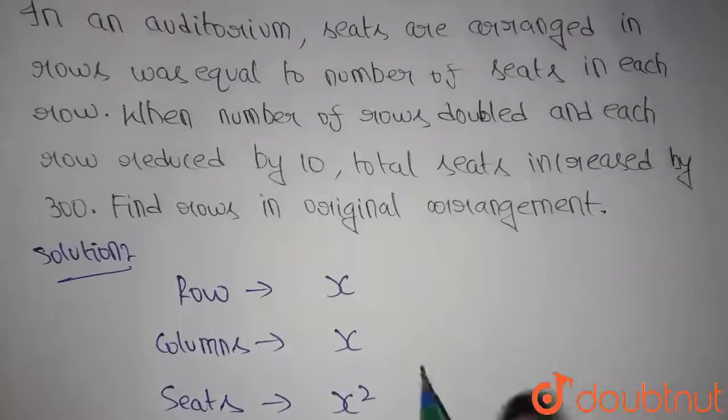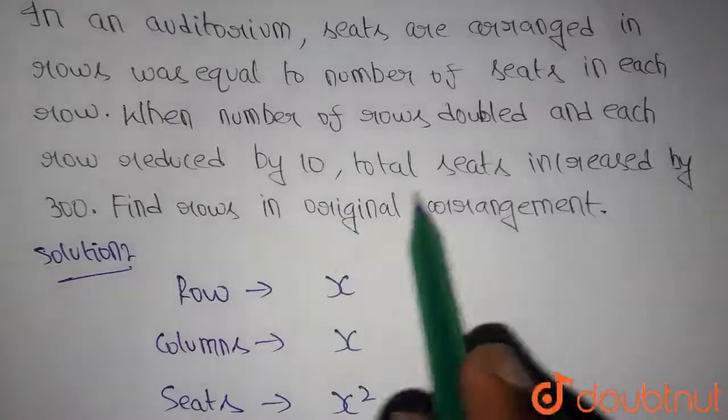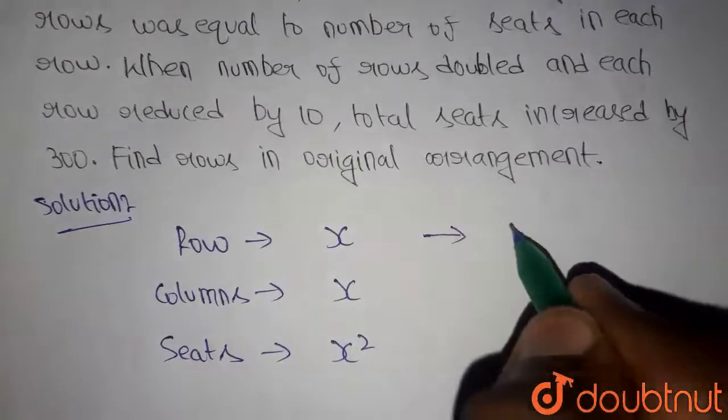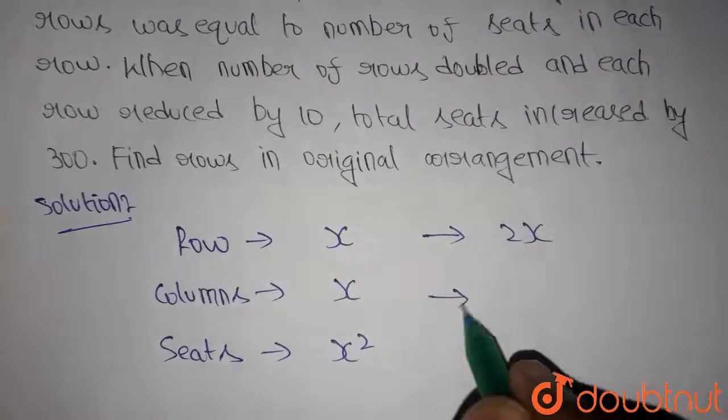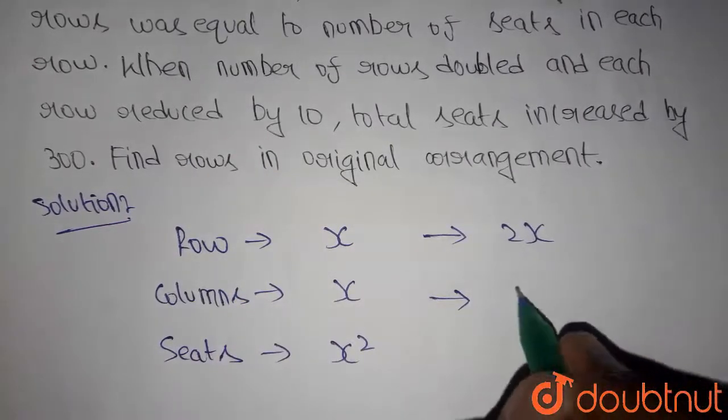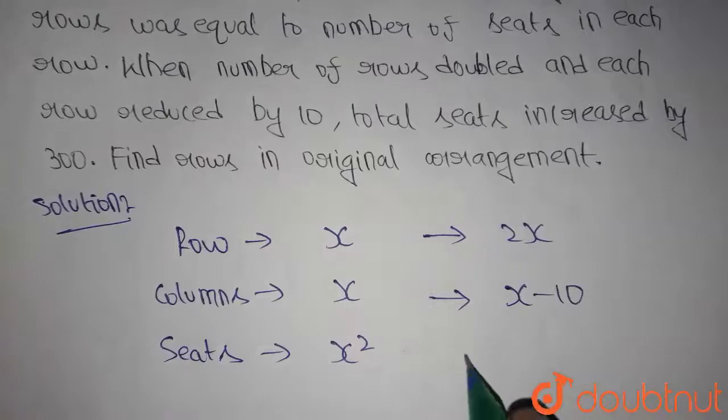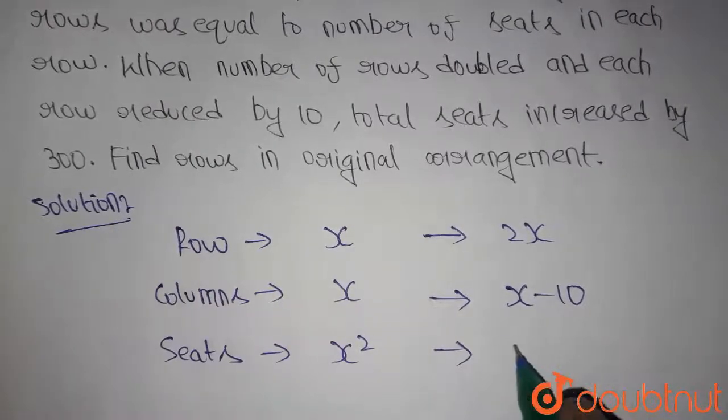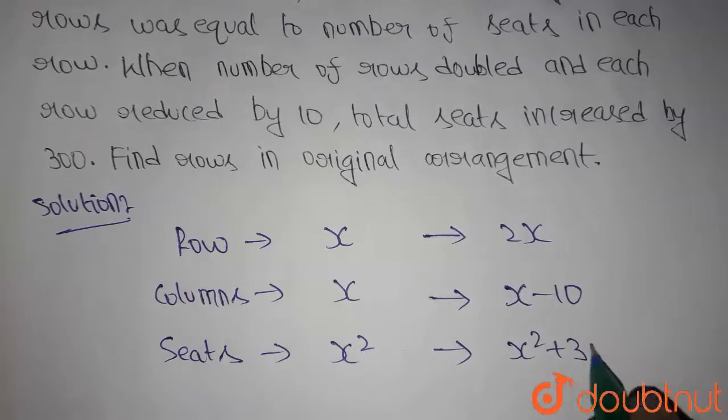Now we are making certain changes such that the number of rows are doubled. So number of rows becomes 2x. And the seats is reduced by 10, so it will become x minus 10. Then the number of seats will increase by 300, so it will become x square plus 300.